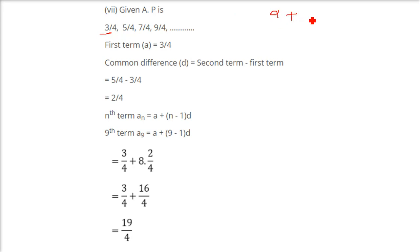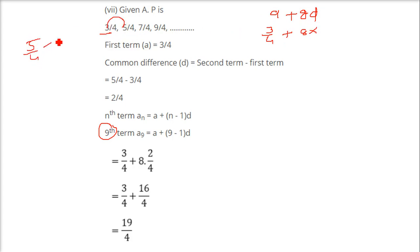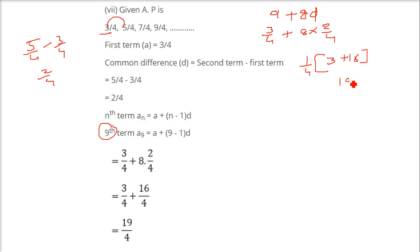Here we have A as 3 by 4. We need to find the 9th term, so it is A plus 8D, since 9 minus 1 is 8. A is 3 by 4 plus 8 into D. D is 5 by 4 minus 3 by 4, which is 2 by 4, that is one half. Taking 1 by 4 common: 3 plus 8 times 2 is 3 plus 16 equals 19. So the 9th term is 19 by 4.